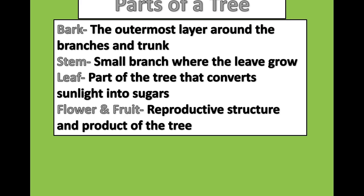Leaves are the part of the tree that converts solar energy into sugars. These are the most distinctive morphological features for identification but are seasonal in deciduous trees. Flowers and fruits are the reproductive structure and product of a tree. They are also very useful in tree identification but are much less reliable and rarely found on the tree themselves.